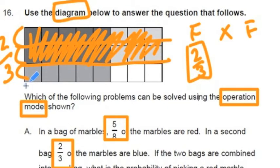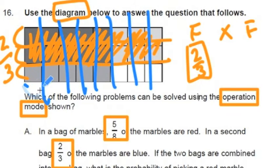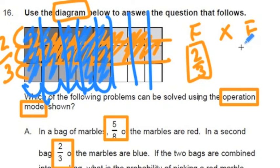If we take the shape and divide it up into columns, we have one, two, three, four, five, six, seven, eight columns, of which one, two, three, four, five are shaded. We could say that the other portion is 5 eighths.